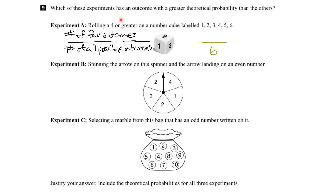Now we want to get a 4 or greater. How many ways can we get 4 or greater? We can get it by rolling a 4, a 5, or a 6. So there are 3 ways of getting what we want — our favorable outcomes — and that goes on the top. So we have a 3 out of 6 chance of rolling 4 or greater.